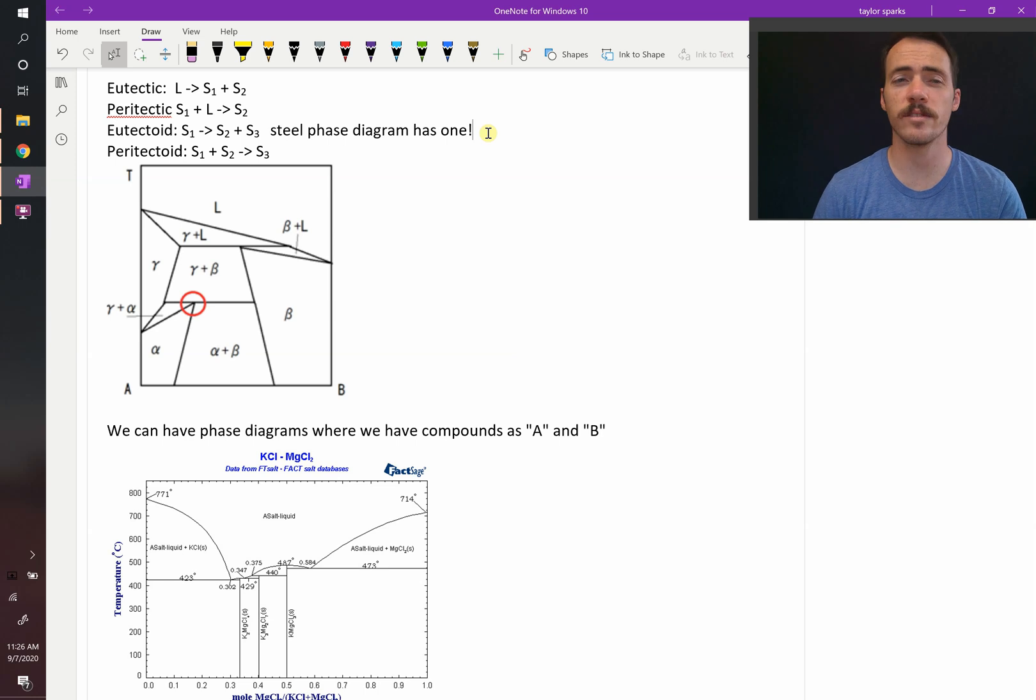but there's other reactions that are important for phase diagrams. For example, eutectoid and paratectoid.